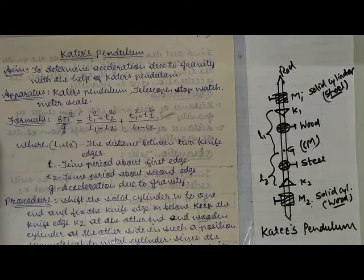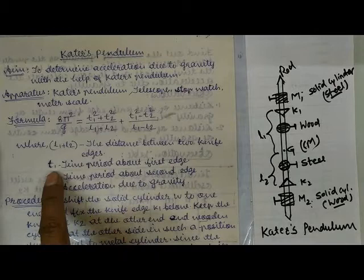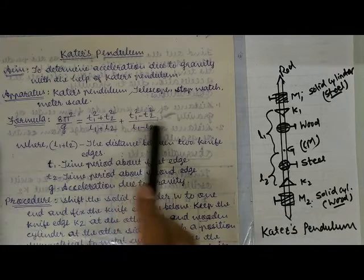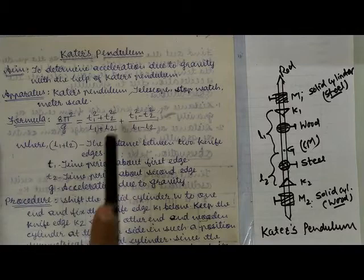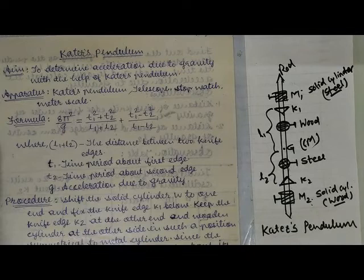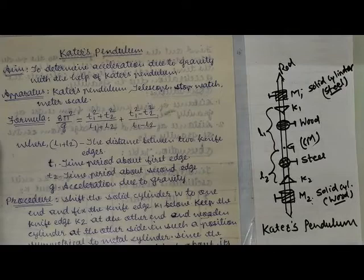If we add L1 and L2, that will be the distance between the two knife edges. T1 is the time period about the first knife edge K1, and T2 is the time period about the second knife edge K2 — which we get by reversing the pendulum. g is what we have to find: 8 and π are constants. What we actually need to obtain from this practical are T1 and T2.